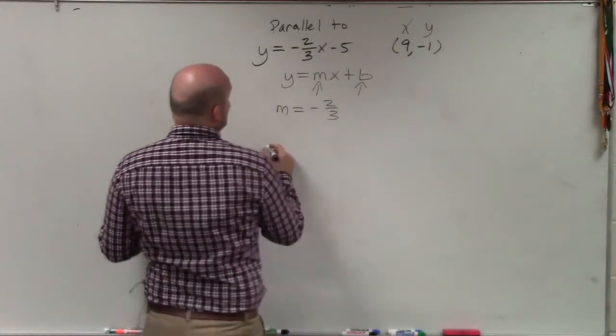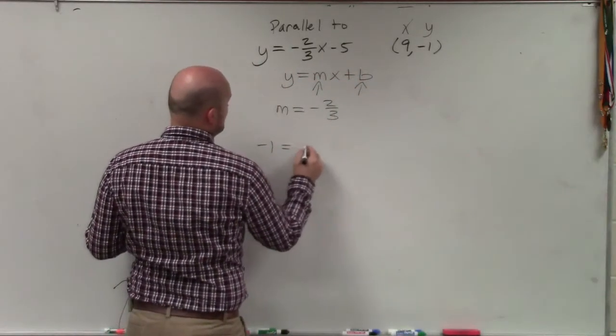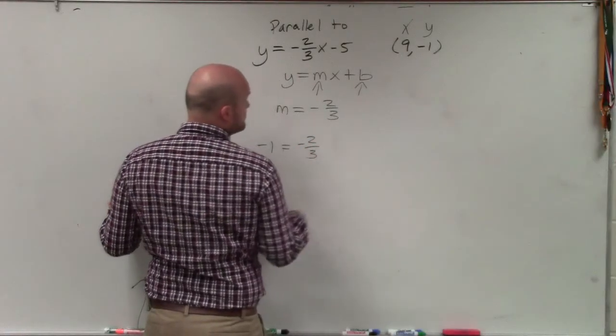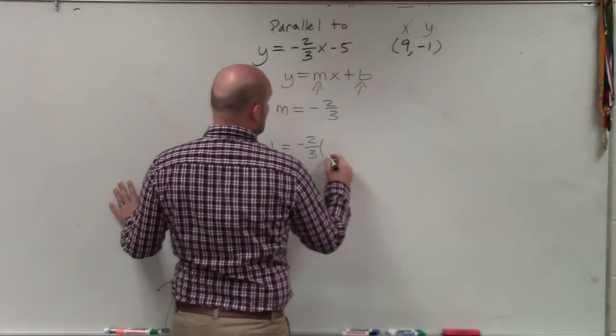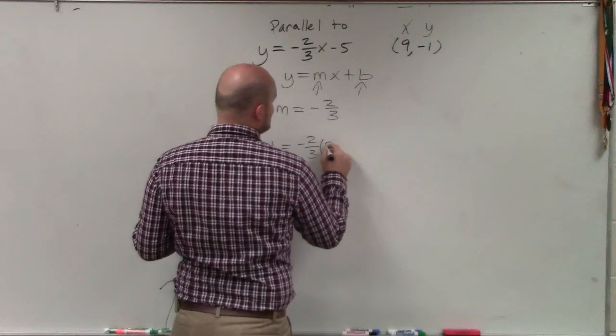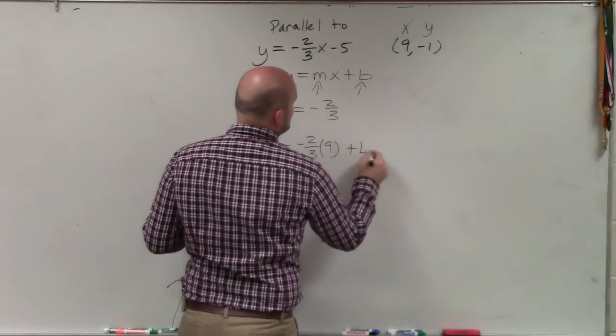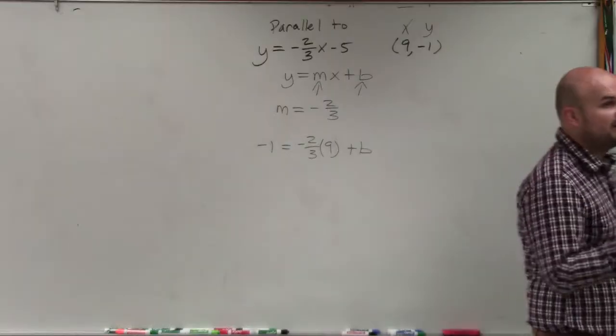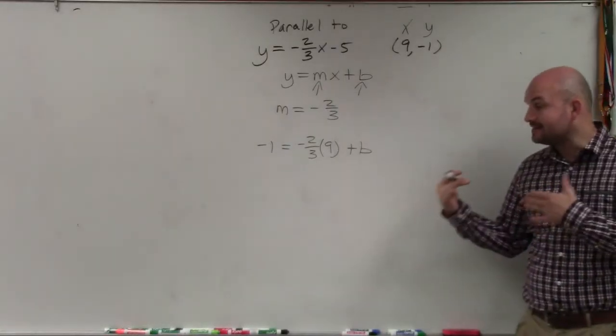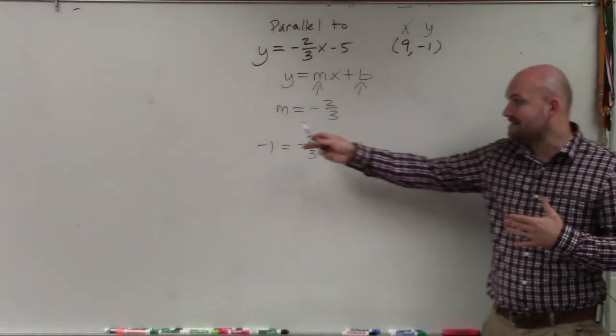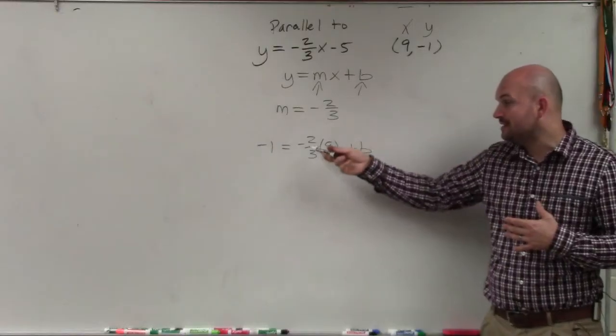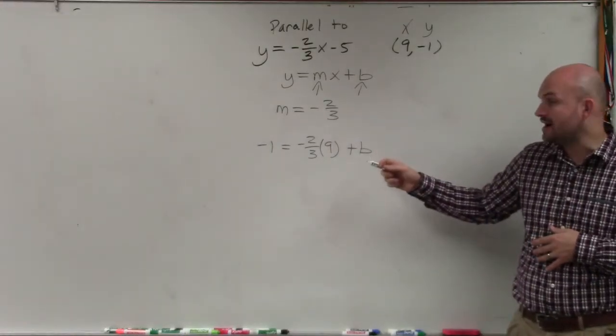So by doing that, I end up having negative 1 equals negative 2 thirds, which represents my m, times x, which is 9, plus b. I still don't know what the y-intercept is. But if I plug in the slope and the y and the coordinate point, x, y, and m, I can now solve for b, which would be my y-intercept.